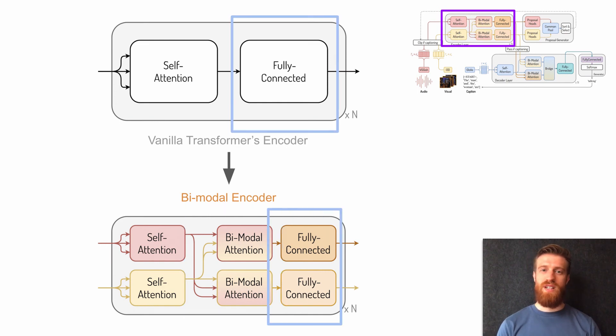Finally, the position-wise fully-connected net is applied to every position in the input sequence. The bimodal encoder inputs features of any length and size which can be distinct for each modality, and outputs visual-attended audio and audio-attended visual features.